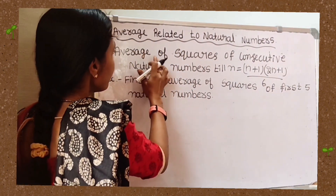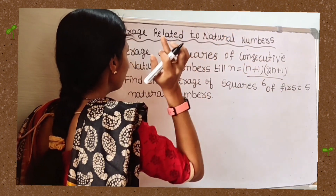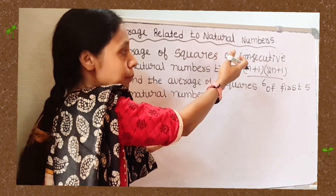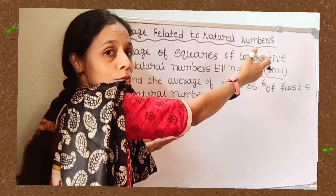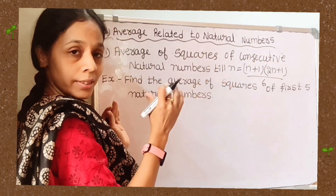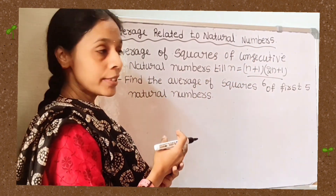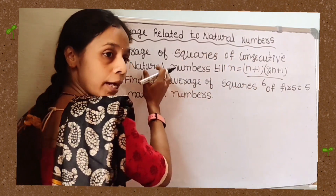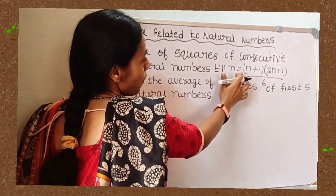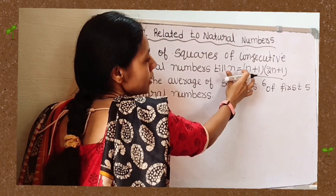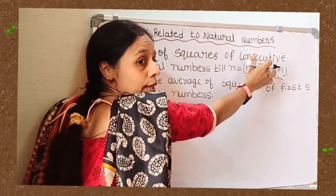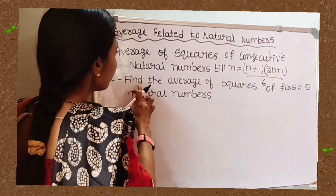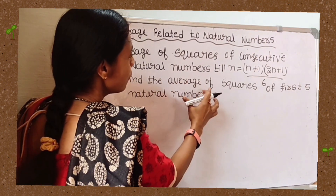Next we consider the average of squares of consecutive natural numbers. The formula is: average equals n plus 1 into 2n plus 1, divided by 6. For any set of observations in the form of squares of consecutive natural numbers, we use this formula.